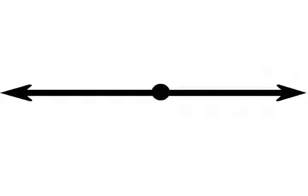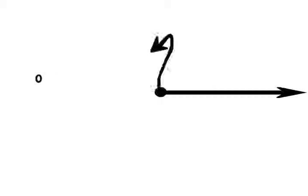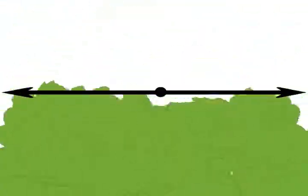Notice that a number line has an arrow on each end. That means the numbers go on and on, all the way to infinity, in both directions.